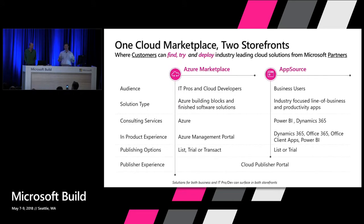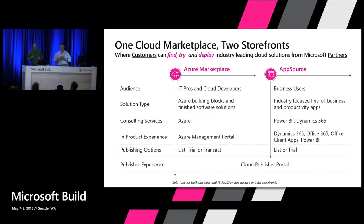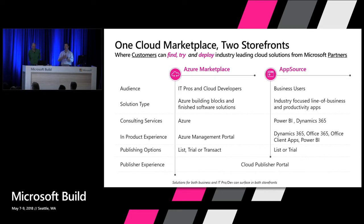One of the interesting things we have as part of marketplace that gets some people confused is the fact that we have two storefronts. The reason we have two storefronts is because we are dividing the audience. One audience is going to be for your IT pros; the other is going to be for your business users. For Azure Marketplace, the product experience is going to be on the Azure management portal. For AppSource, it's going to be on the Office 365 environments. Both storefronts use the same back-end system — we call it the Cloud Publisher Portal.